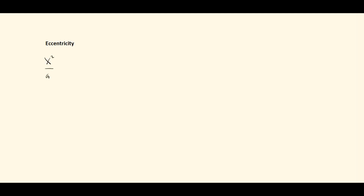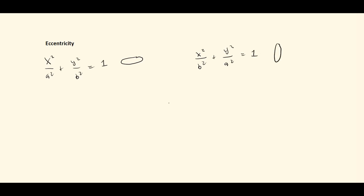Eccentricity is a number that tells us how much an ellipse is stretched. Whether we have an ellipse of the form x squared over a squared plus y squared over b squared equals one, which is stretched side to side, or x squared over b squared plus y squared over a squared equals one, which is stretched up and down, the eccentricity is the number we get when we take c and divide it by a.